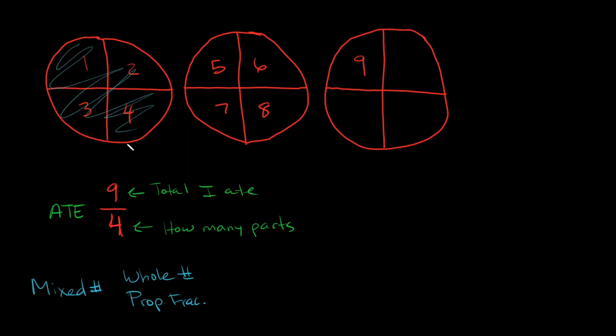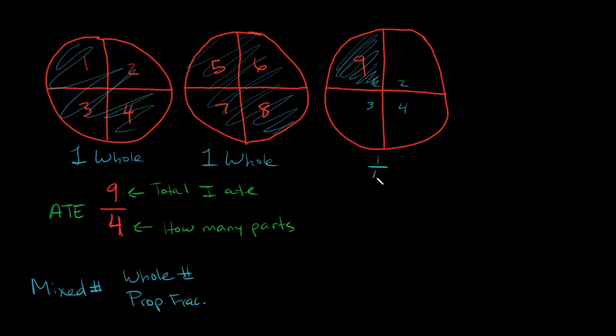So how many whole pizzas did I eat? Well, I ate this whole thing. I ate all four slices here, so I ate this whole pizza. Here's one whole pizza. I also ate all four slices here. So here's another whole pizza. And then how many slices did I eat here? Well, this is split into one, two, three, four slices. But this is the only one I ate. So I only ate one out of four slices here. So how many whole pizzas did I eat? I ate two whole pizzas. I ate this whole thing and I ate this whole thing. And how many individual slices or fractions did I eat? Well, I ate one fourth of that last one. So we could rewrite this as two and one fourth. So can you see, nine fourths is equal to two and one fourth.